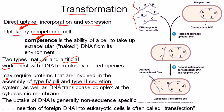For transformation, the bacteria need a type of protein or receptor on the cell membrane, like the Type 4 pili and Type 2 secretion system, and also need the DNA translocase complex. All of these proteins help the fragmented DNA to go inside the bacterial cell. This type of DNA uptake is generally non-sequence specific, meaning whatever the sequence of the fragmented DNA is, there is no problem — the fragmented DNA goes inside the bacterial cell.